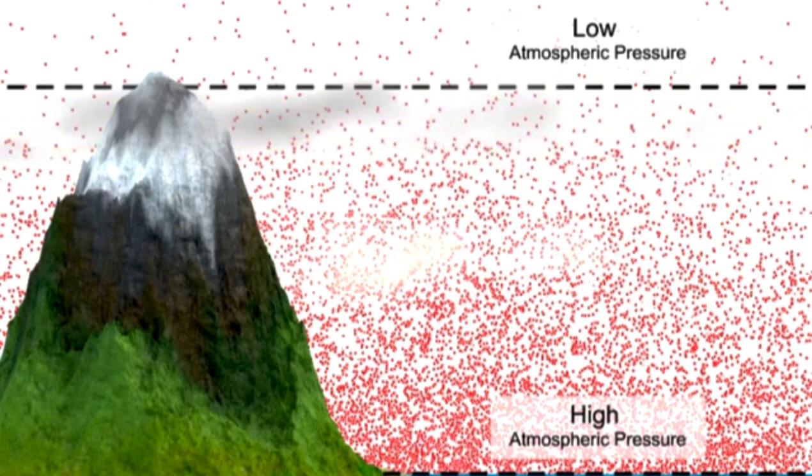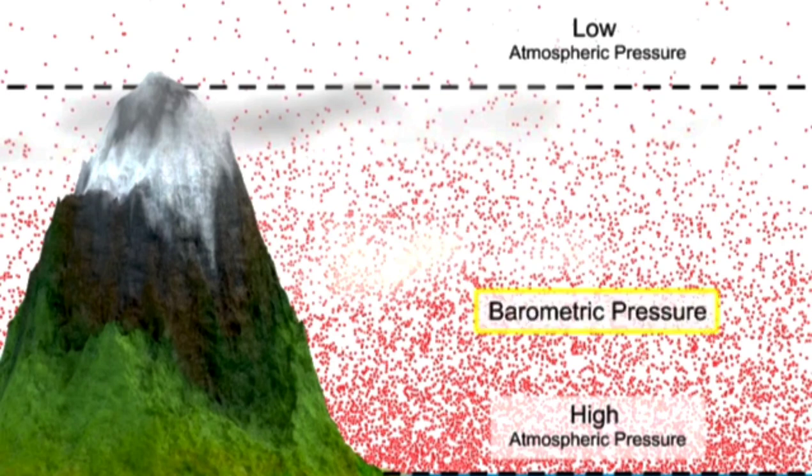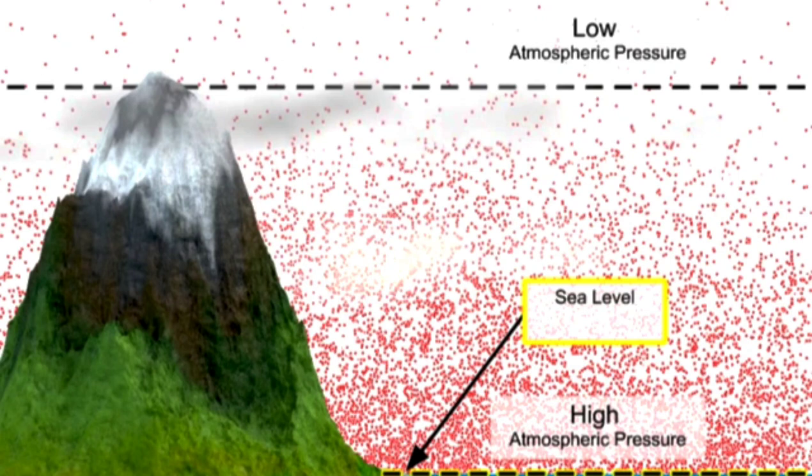The maximum force available from a vacuum is dependent on the barometric pressure at its location. At sea level, the barometric pressure is about 14.7 pounds per square inch under standard conditions.